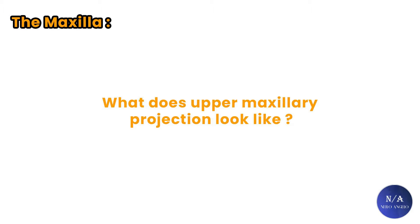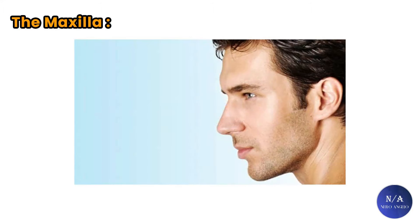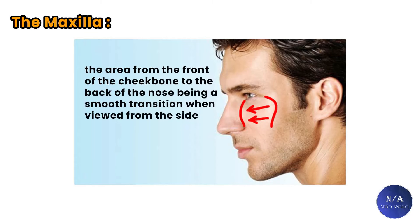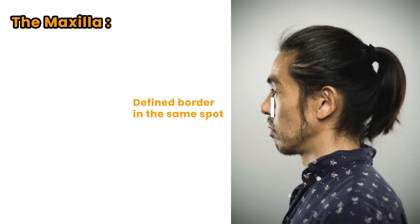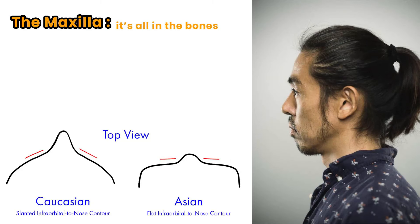What does upper maxilla projection look like? Upper maxillary projection is characterized by the area from the front of the cheekbones to the back of the nose being a smooth transition when viewed from the side. The man in this example has a seamless blend between the zygoma and the back of the nose, contrasted with another man who has a clearly defined border in the same spot. The difference is due to the slope of the bone around the nasal aperture — with a forward upper maxilla, the bones on the left and right taper forward and inward toward the nose, while with a flat upper maxilla, the bones on both sides are parallel.